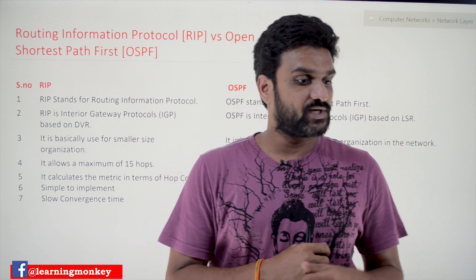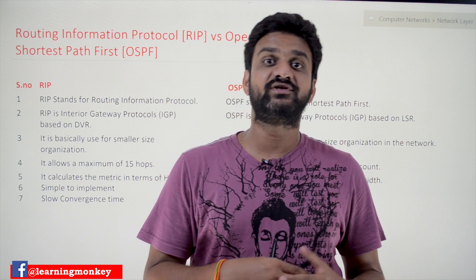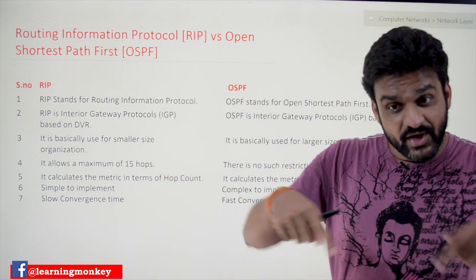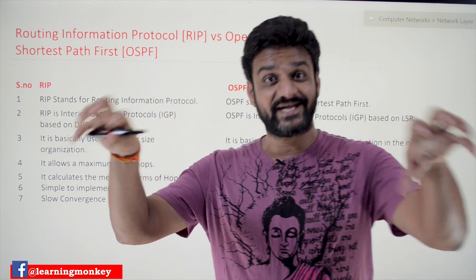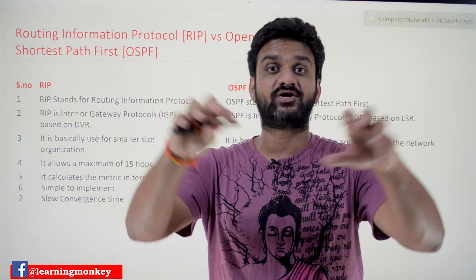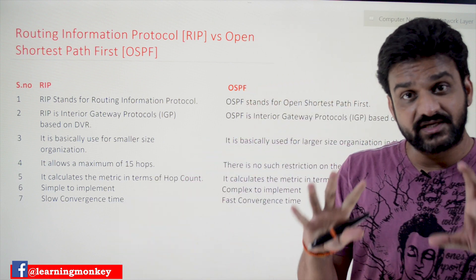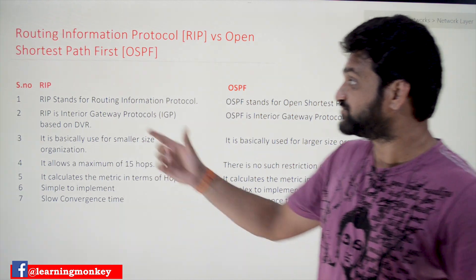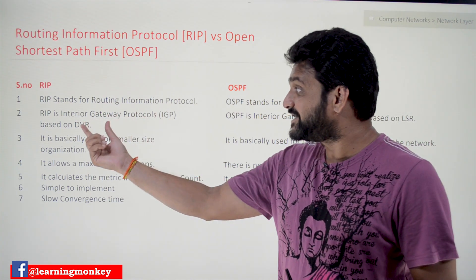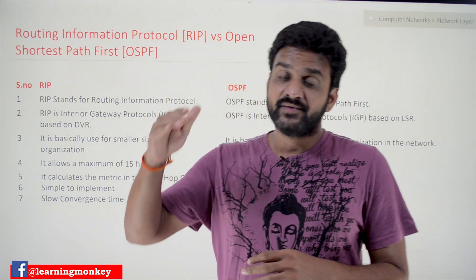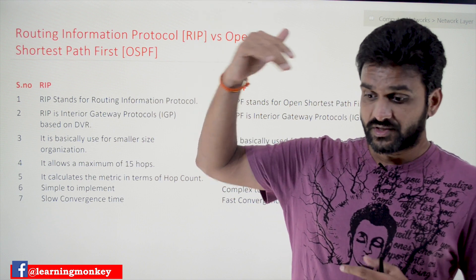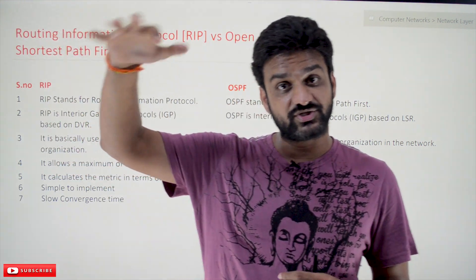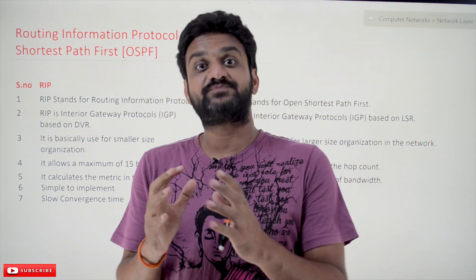For example, if you take large networks like Reliance or BSNL, they have networks throughout the country. In that case, these kinds of gateway protocols generate the shortest path among the routers used in different states of India, interconnecting networks within that organization. Border Gateway Protocols are different — they are used when continents are getting connected, to generate the shortest path between those larger networks.